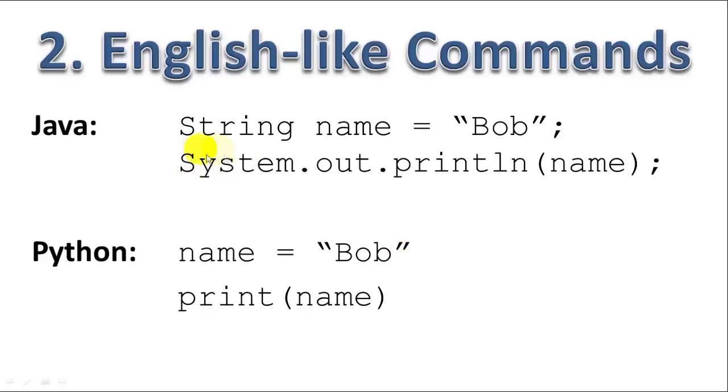And then to print it out, we have to say system.out.println(name) semicolon. In Python, you can simply say print(name). So you can see the syntax and the readability of Python is so much simpler than Java, C, and actually most other programming languages.